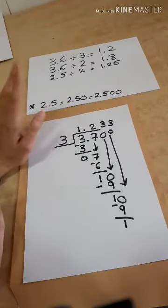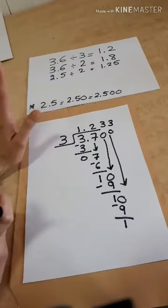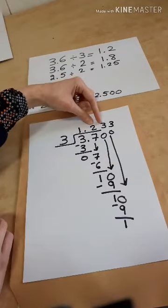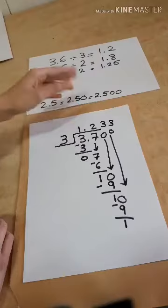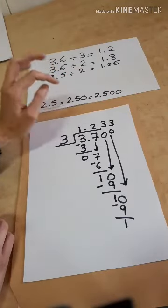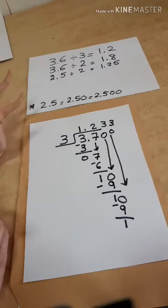In that case, we prefer that you stop at 3 digits or 2 digits after the decimal point. So, we say that the answer is approximately 1.233 or we say that it's 1.23. Okay?